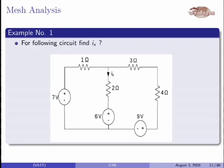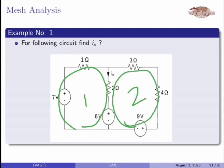This is the first example. Here we have to find the current Ix, which is the current through the 2-ohm resistance and also the current entering into the 6-volt voltage source. As described previously, the first step is to identify the meshes. In this circuit there are only two meshes. The first mesh is this one and the second mesh is this one - each is a closed path with no other closed path inside it.